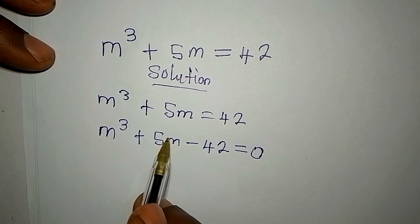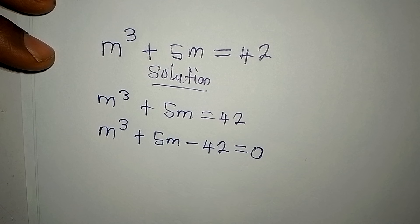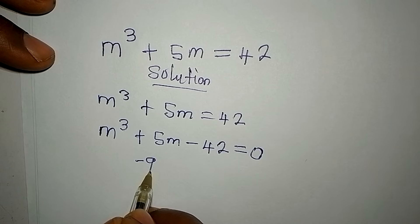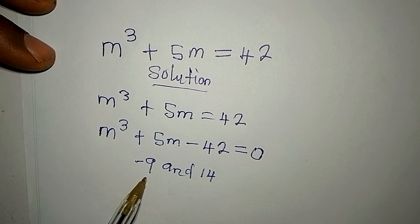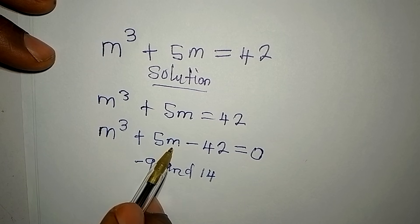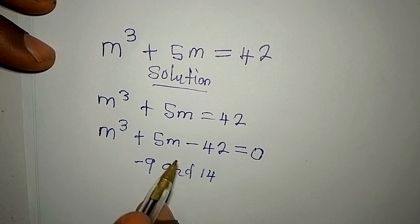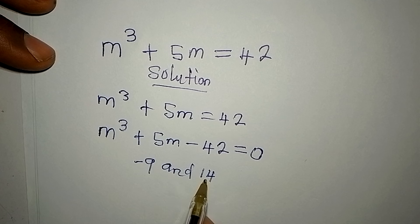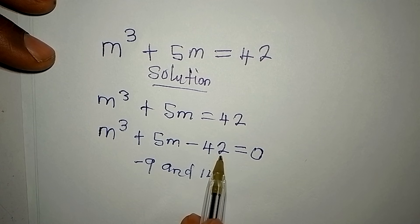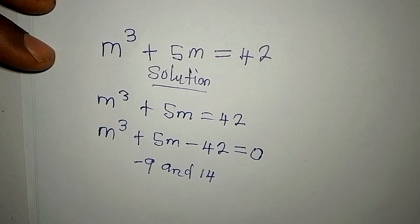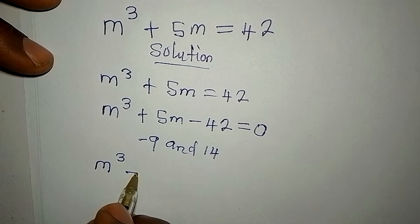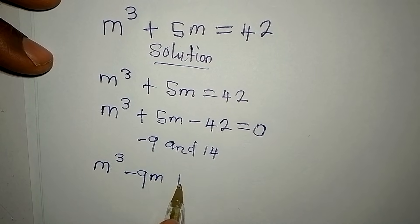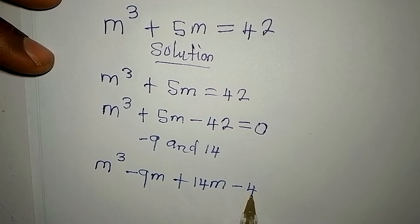The next step is to factorize this. I've chosen two numbers: minus 9 and 14, because minus 9 plus 14 gives us 5. We are going to factorize — there's something common to 14 and 42; in fact, 14 is a factor of 42. So we have m to the power of 3 minus 9m plus 14m minus 42 equals 0.